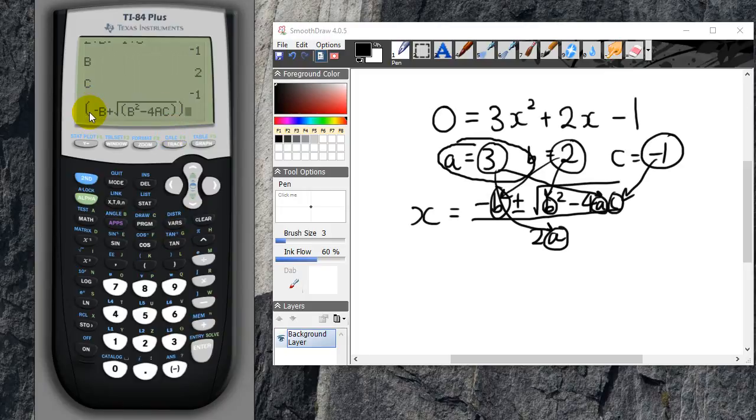Then we need to get out of the square root sign, so press the right key, and then close the bracket again. That closes the outside bracket. Then we're going to put in divide by bracket again, 2 times a, 2a. Finish the bracket. So there is the quadratic formula entered into the calculator.